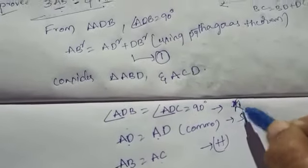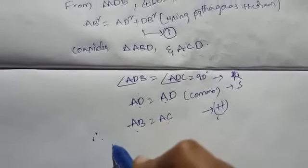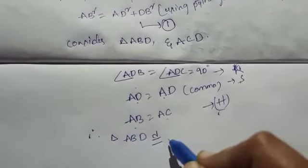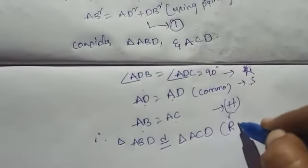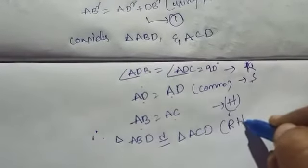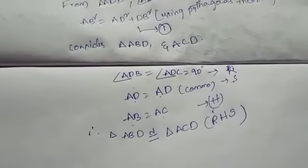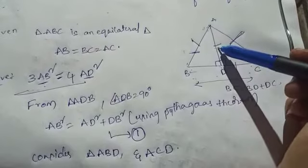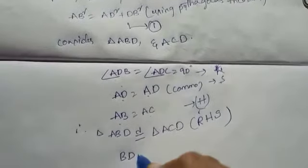Using RHS congruency, triangle ABD is congruent to triangle ACD, from right angle hypotenuse side congruency. If two triangles are congruent, the corresponding sides are equal. We know AB equal to AC and AD equal to AD, so BD equal to DC.